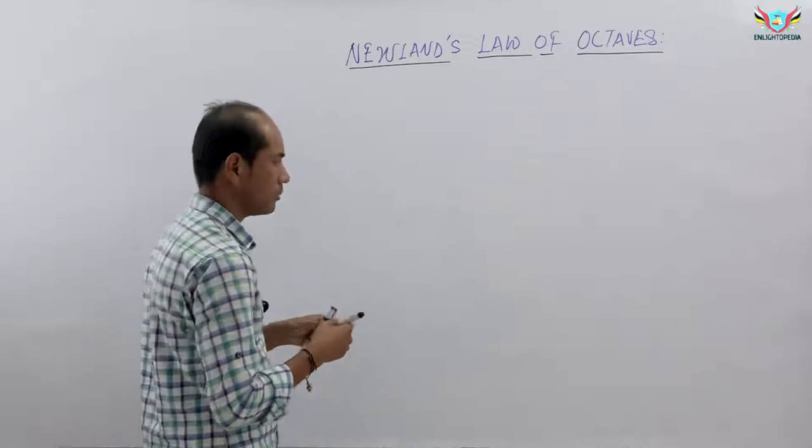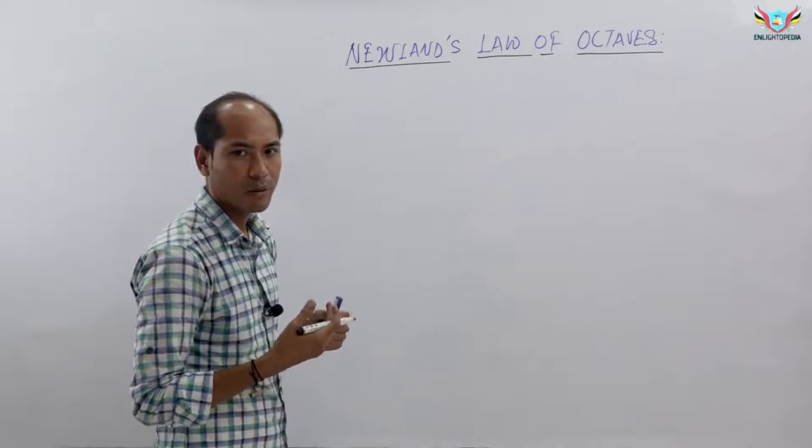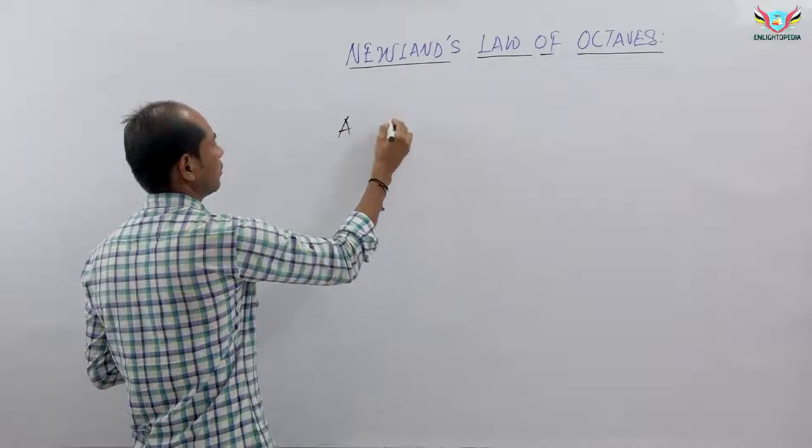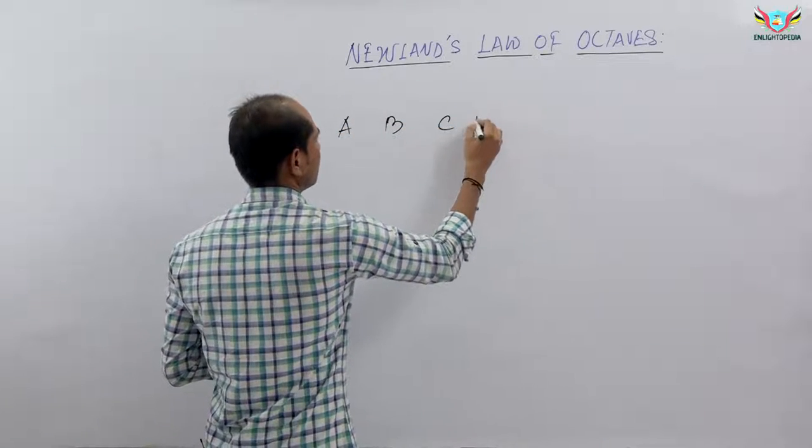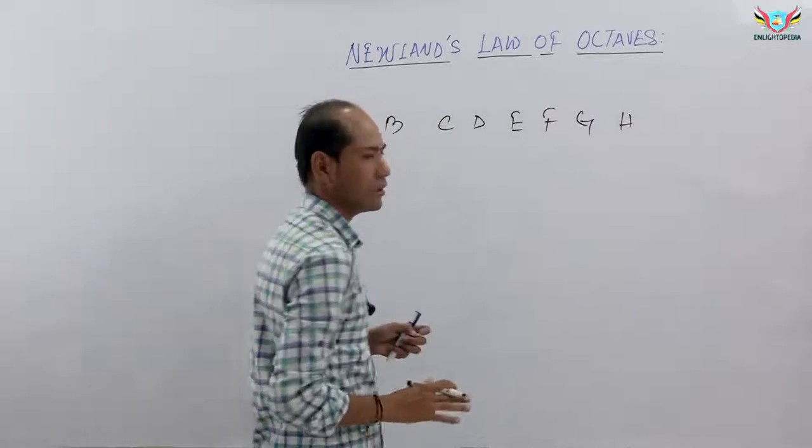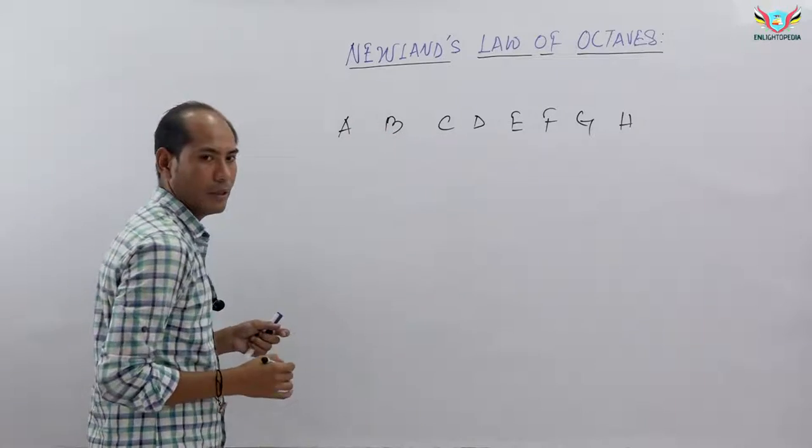For example, if you have a class, the elements in ascending order are assumed: A, B, C, D, E, F, G, H, I. The ascending order of the elements is assumed.